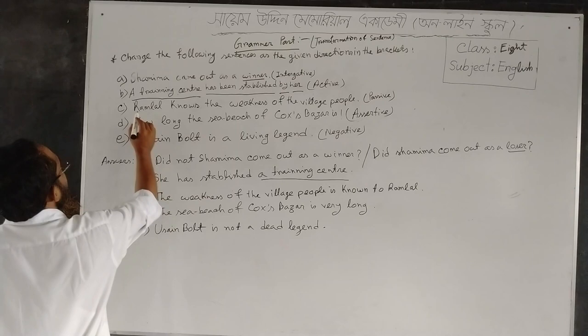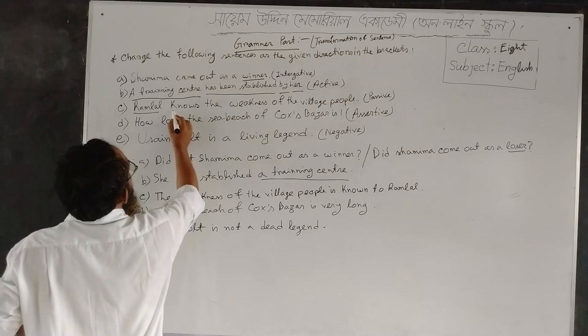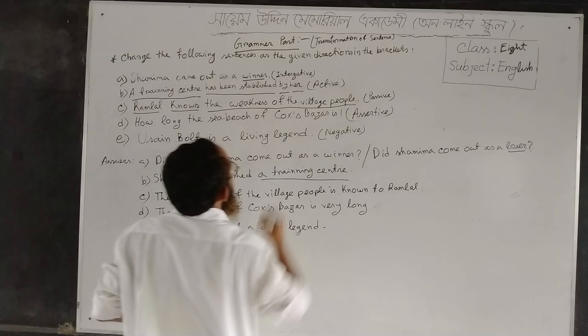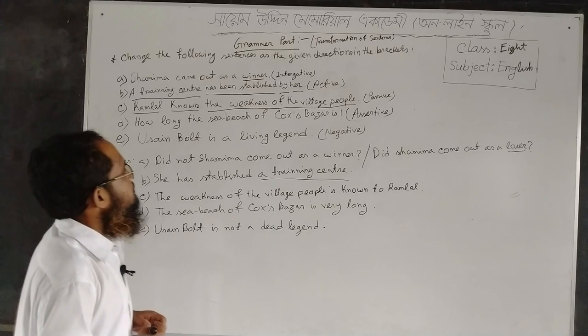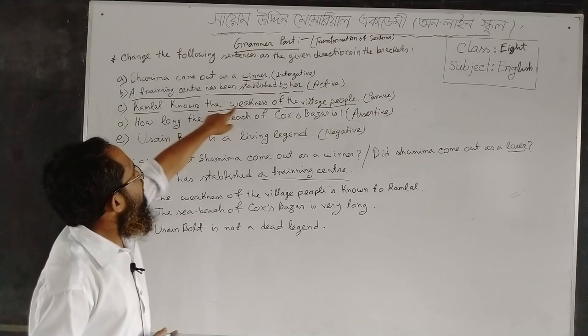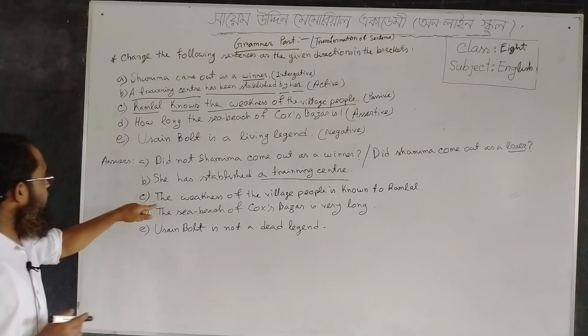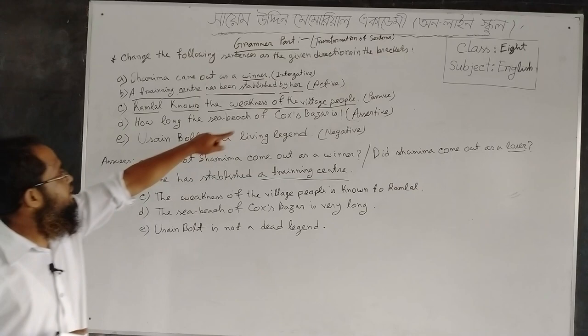According to grammar rules, the subject is 'Ramlal', 'knows' is the principal verb, and 'the weakness of the village people' is the object. If you want to make it passive, you have to place the object as a subject. So I use this object as a subject: 'The weakness of the village people'.